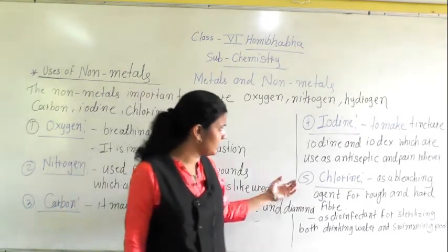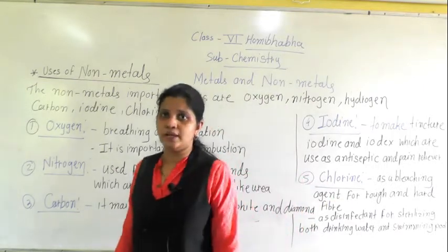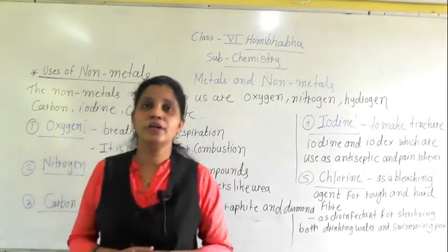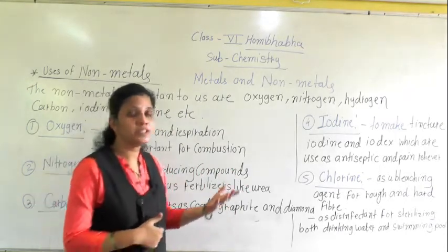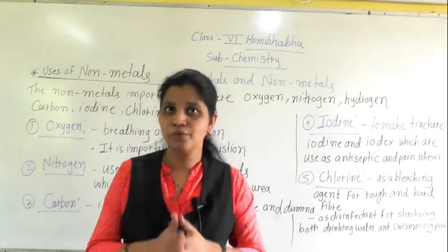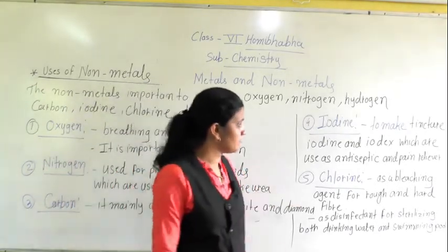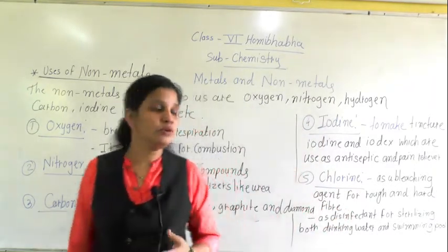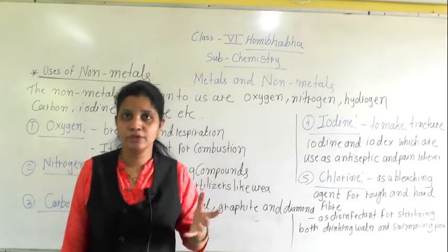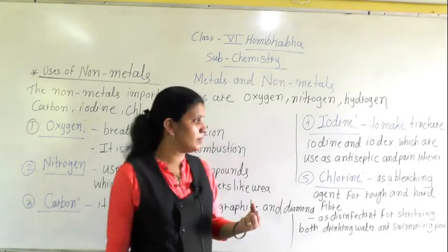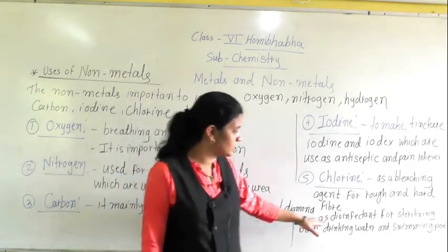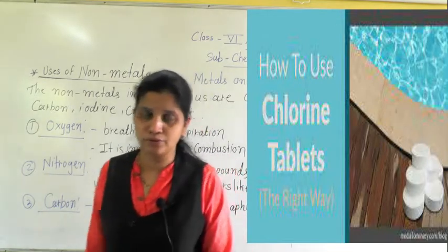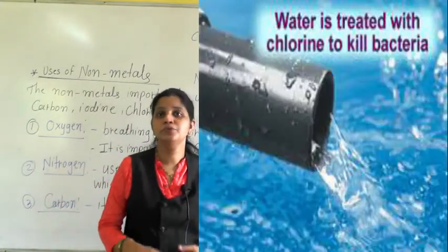The next non-metal is chlorine. Chlorine tablets are used for chlorination of water — they help to kill germs, which is a very important use of chlorine. Chlorine is also used as a bleaching agent for rough and hard fiber. Chlorine powder is used for bleaching purposes and as a disinfectant for sterilizing both drinking water and swimming pool water.